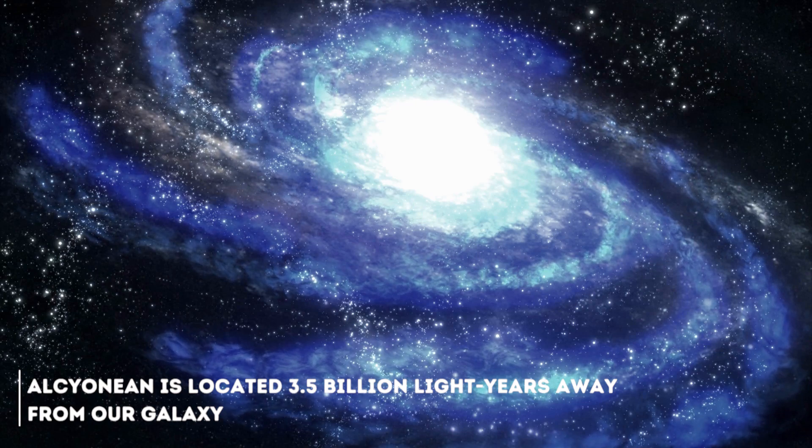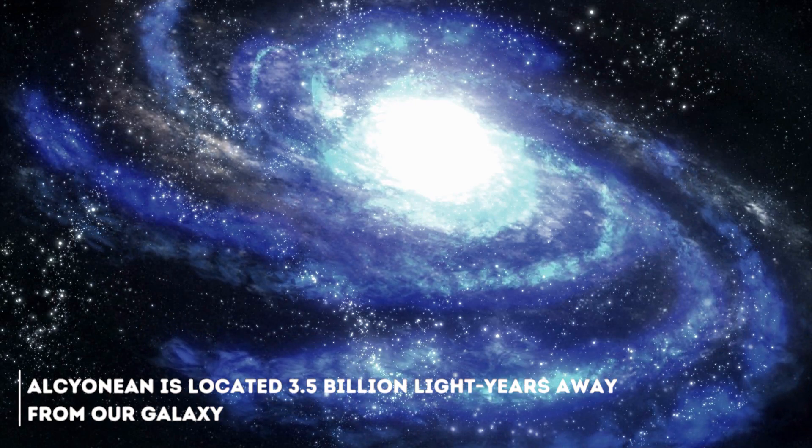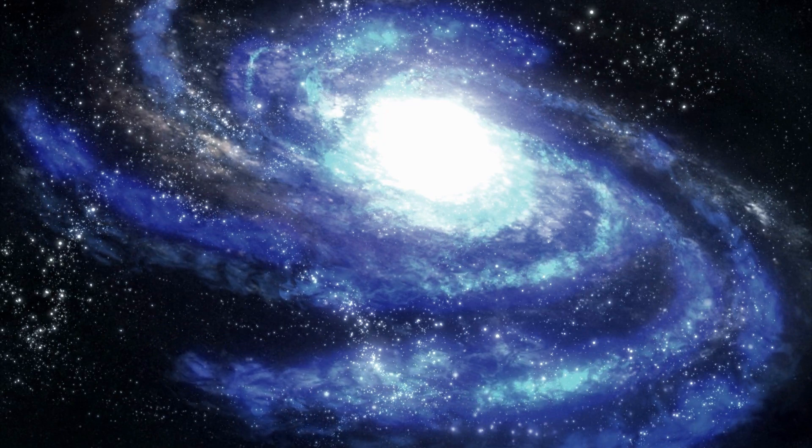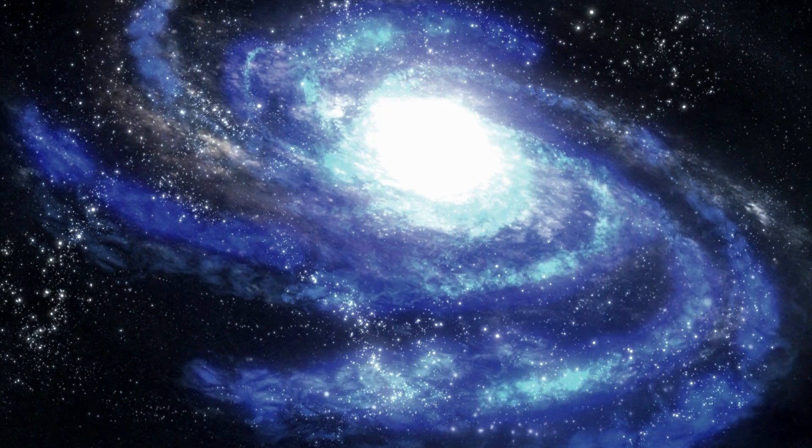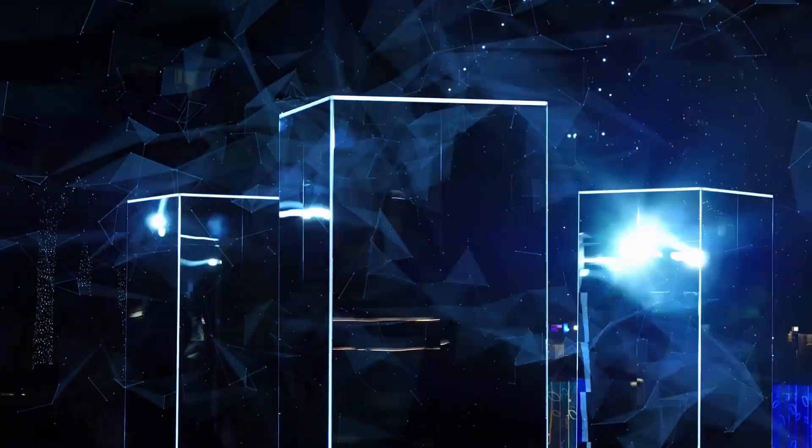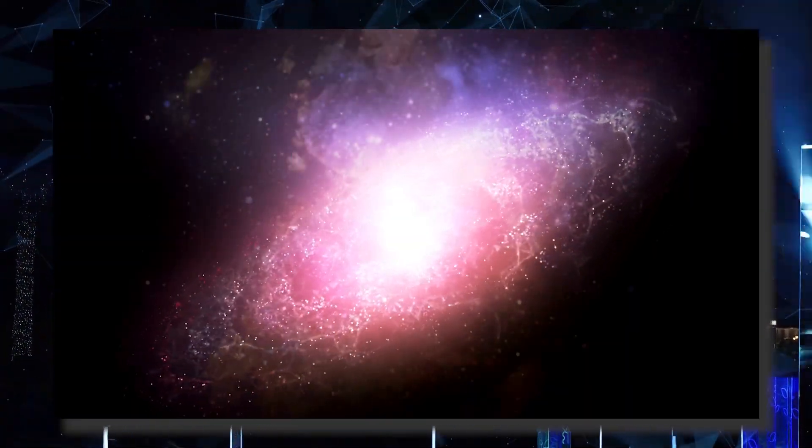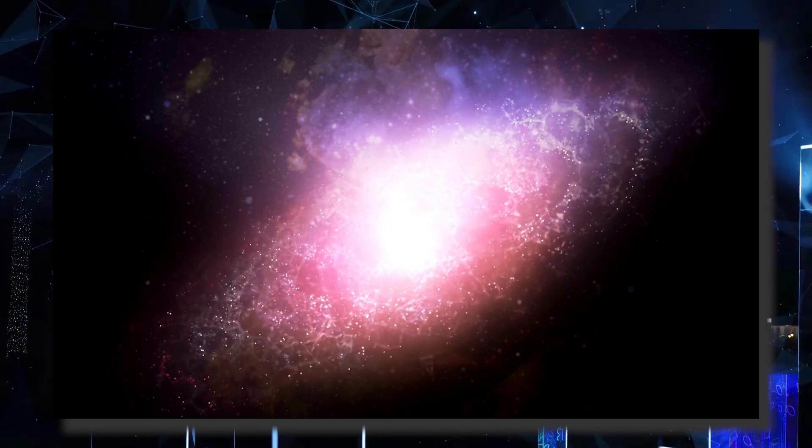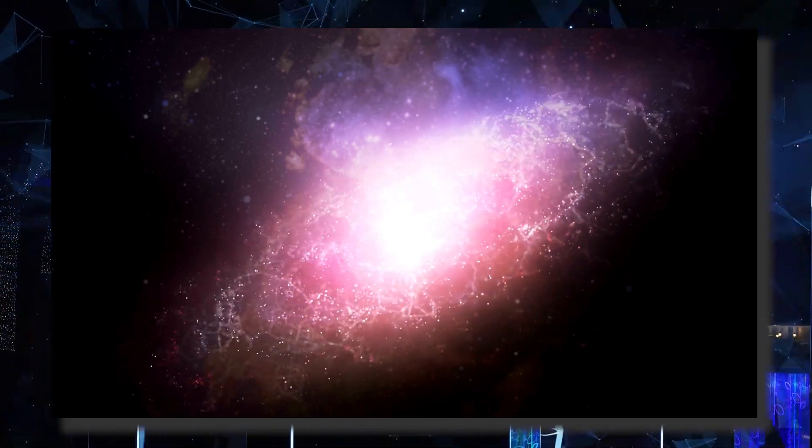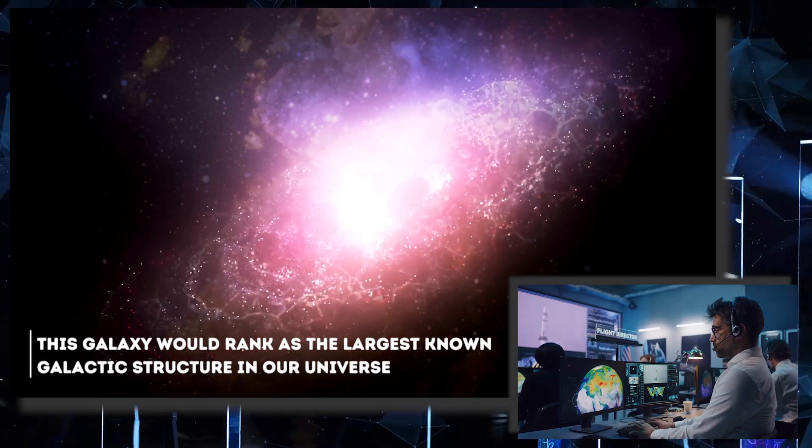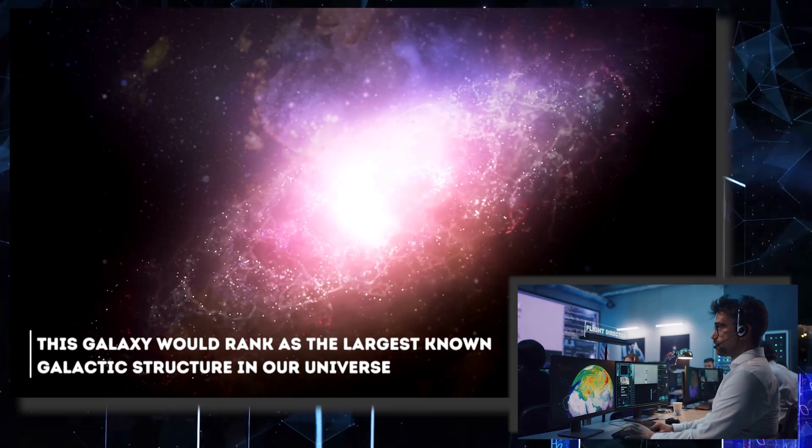Alcinean is located 3.5 billion light years away from our galaxy. According to several scientists, this galaxy is one of the strangest things ever found in our universe. The beginning of its history is complicated in itself. This massive and imposing galaxy was discovered by accident in what has been catalogued as a great stroke of luck. Estimates made by scientists indicate that this galaxy would rank as the largest known galactic structure in our universe.